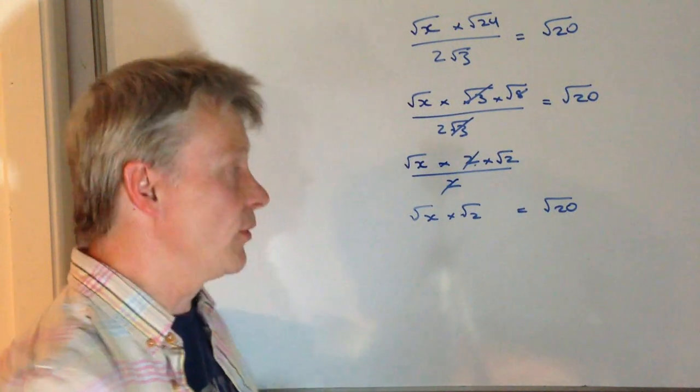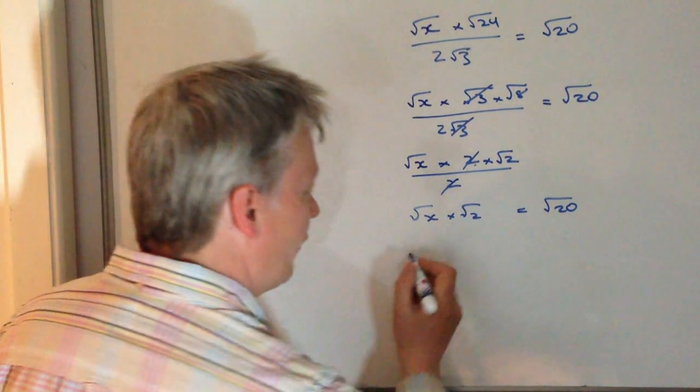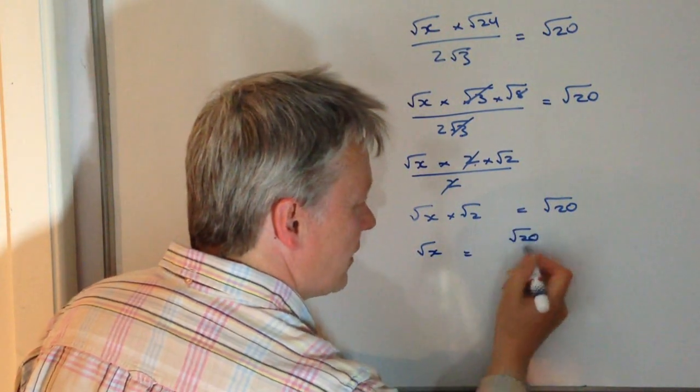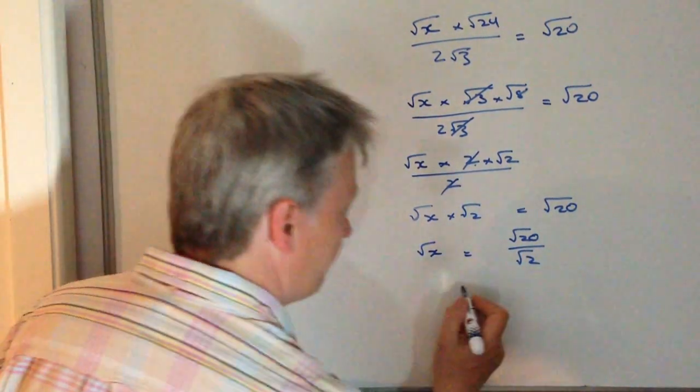So now I'm in a position where I've got root x times root 2 equals root 20. Well that's much easier to solve because all I do then is divide through by root 2. So I've got root x equals root 20 divided by root 2 and that's going to be equal to root 10.